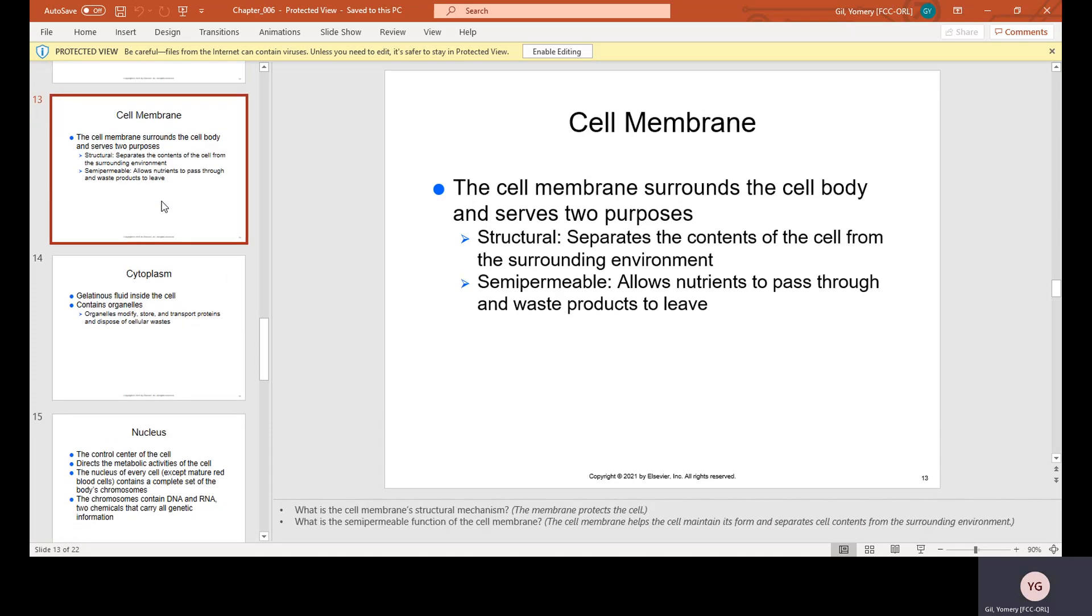Cell membrane. The cell membrane surrounds the cell body and serves two purposes. Structural, which separates the contents of the cell from the surrounding environment, and semipermeable, which allows nutrients to pass through and waste products to leave.